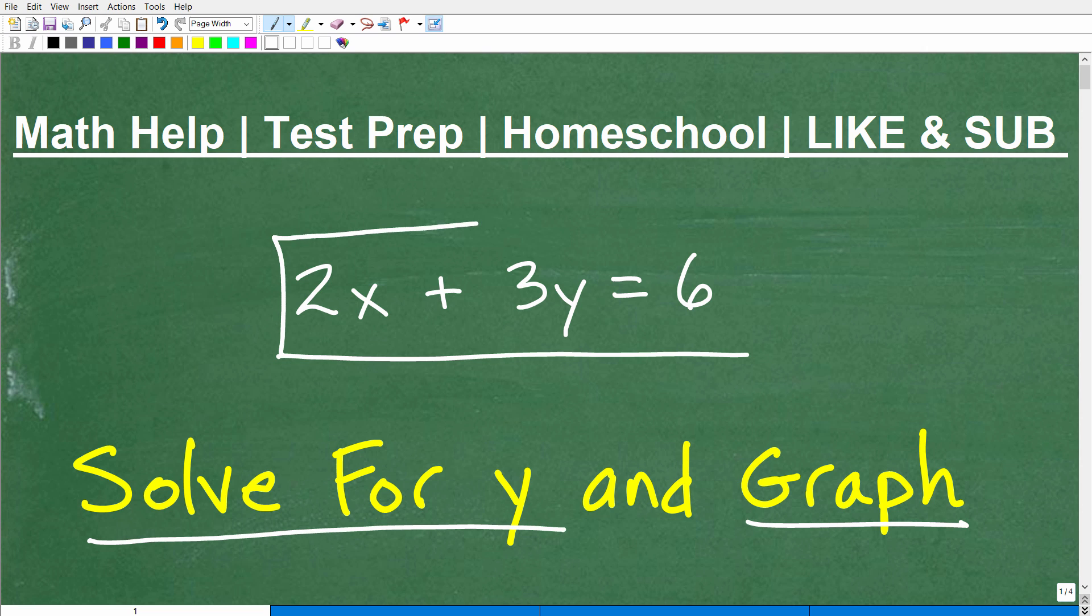Effectively, this problem is stating, let me just write it out this way, this linear equation happens to be in something called standard form. Ax plus By is equal to C is the general form of an equation, a linear equation in standard form.